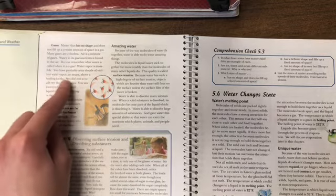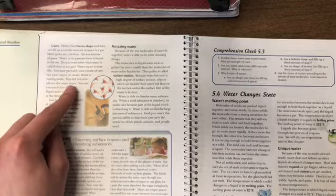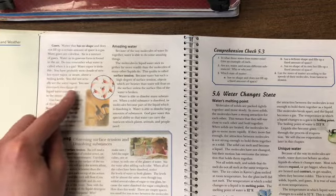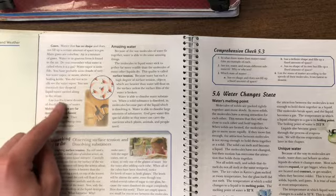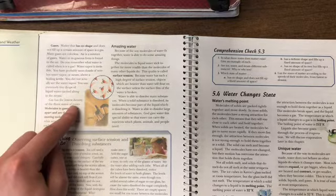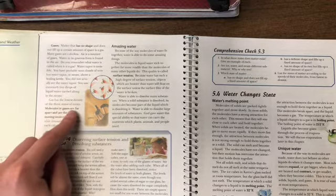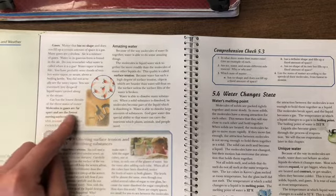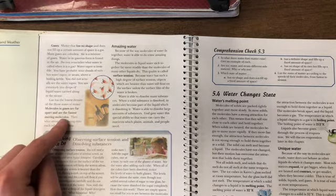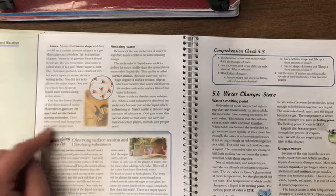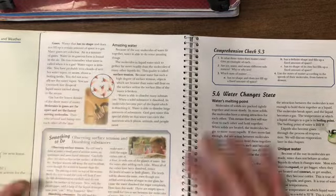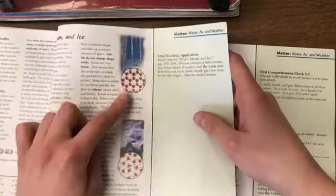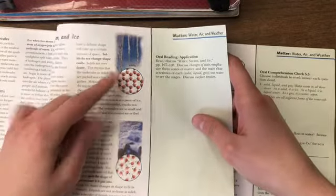Water vapor is invisible. You have probably seen clouds of very hot water vapor or steam above a boiling kettle or pot. You did not actually see the water vapor. You saw extremely tiny drops of liquid water carried along in the steam. Gas has the lowest density of the three states of matter. Molecules in gases are far apart and are the fastest moving molecules. They whiz around and bump into each other all the time. We can see that here in this picture. They're even more spread around than they were for our liquid or for our solid.